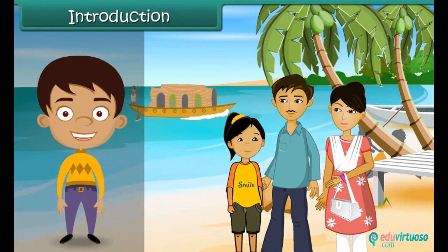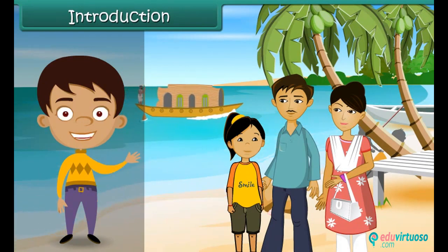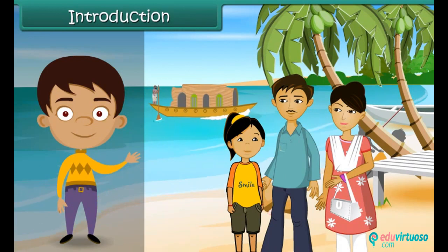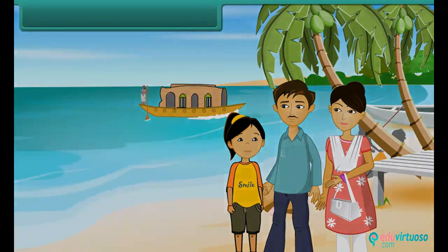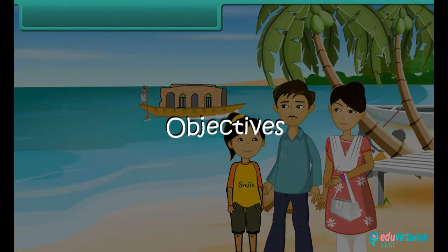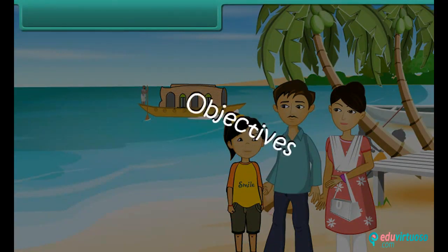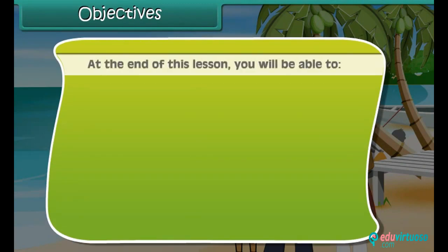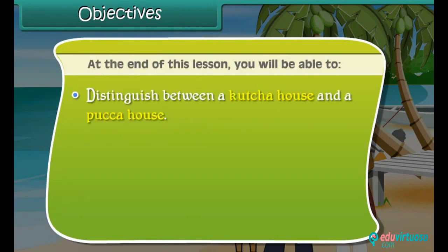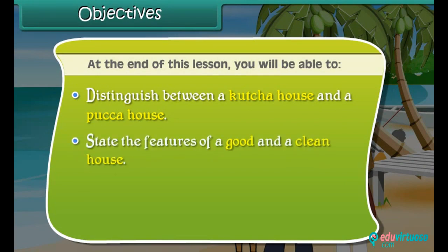In this lesson you will learn about different types of houses. At the end of this lesson you will be able to: distinguish between a kacha house and a pakka house, state the features of a good and a clean house, and list other forms of shelter and name the shelters of different animals.